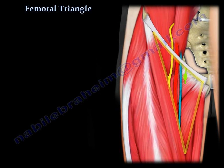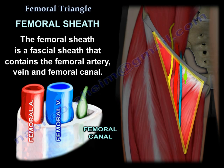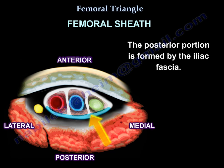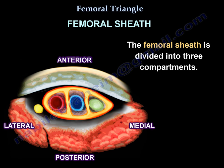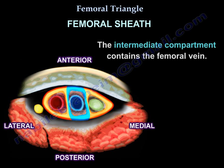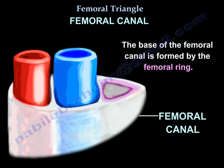Also found within the femoral triangle is the femoral sheath, which is a fascial sheath that contains the femoral artery, vein, and femoral canal. The anterior portion is formed by downward extension of the fascia transversalis, while the posterior portion is formed by the iliac fascia. The femoral sheath is divided into three compartments: the lateral compartment contains the femoral artery, the intermediate compartment contains the femoral vein, and the medial compartment — also known as the femoral canal — contains lymphatic tissue. The base of the femoral canal is formed by the femoral ring.